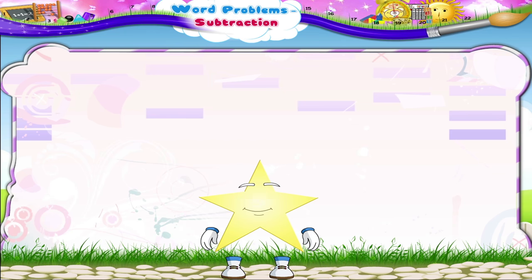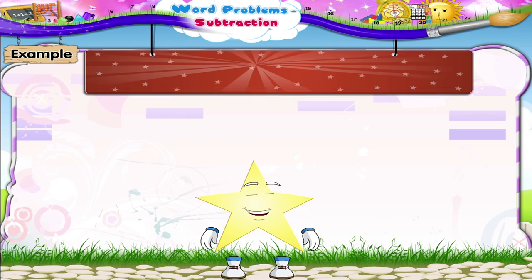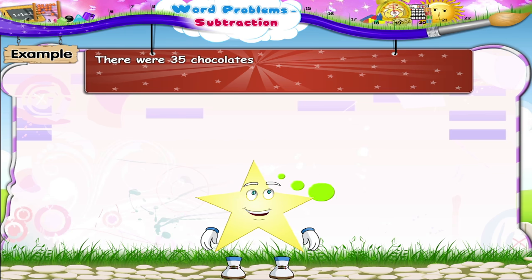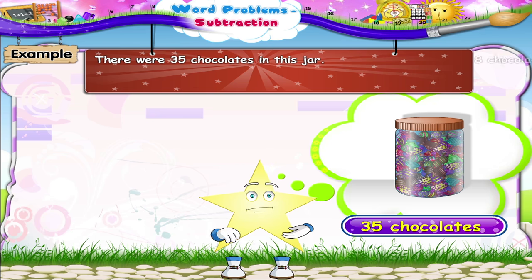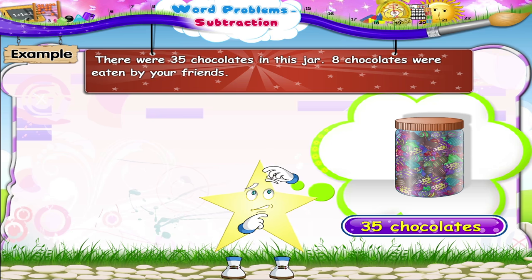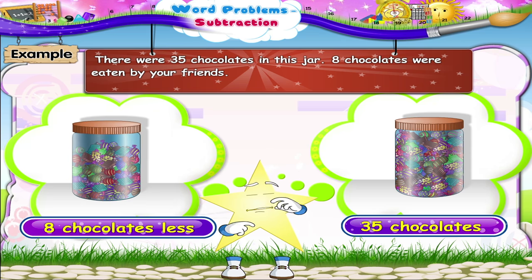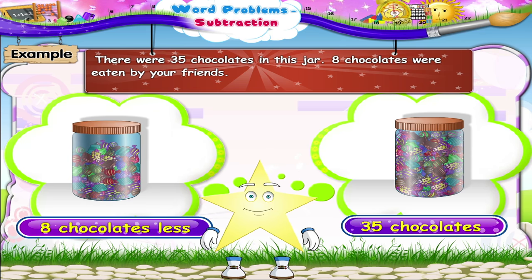Stari, where are you? Look, there were 35 chocolates in this jar, but I feel they are less now. How many chocolates did you and your friends eat? Only 8.